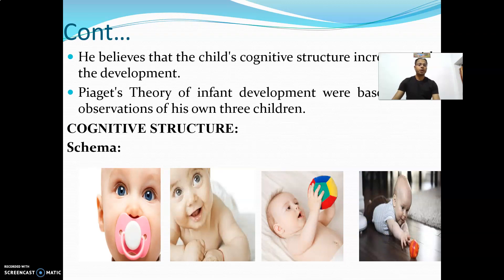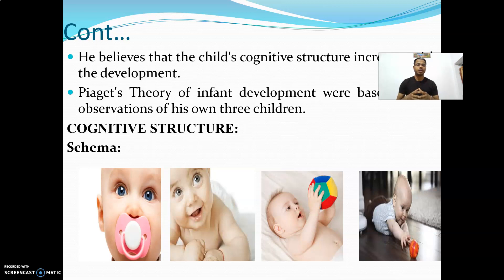Before formulating the stages of cognitive development, we are given three important aspects. The first one is schema. Schema is nothing but the instinct present in an individual when it is born — sucking is a schema, looking is a schema, grasping is a schema, and following is a schema also.